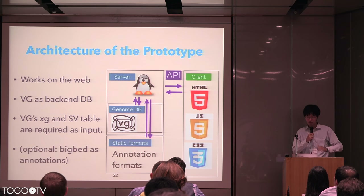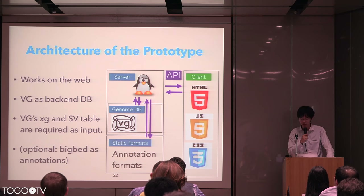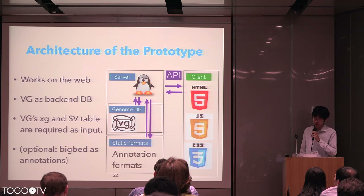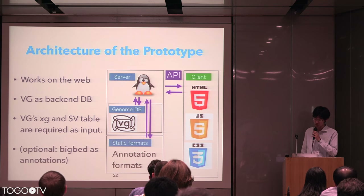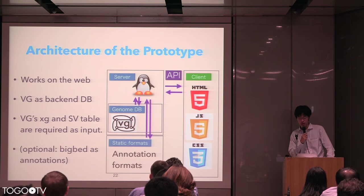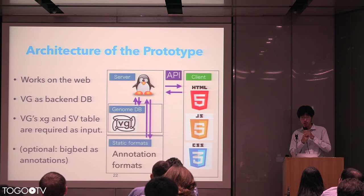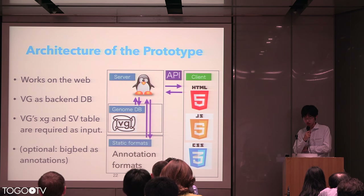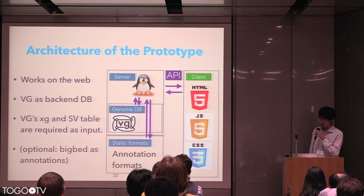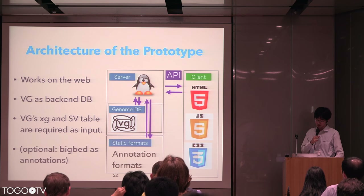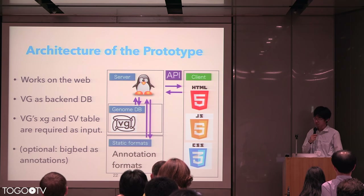So far, I have described the ideas of the graph genome browser, but what I have developed is only a prototype. Next, I will show the details of the prototype. First, I will describe the architecture. Currently, this is a web-based tool, and you can access the URL with your web browser. A server is necessary to display the graph. The backend engine is VG — I really appreciate the VG teams and developers. The client renders a graph fetched by API requests to the server. Currently, VG's XG format and a feature table with reference genome information are required in the backend server.